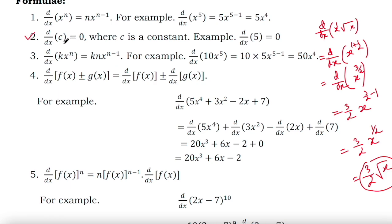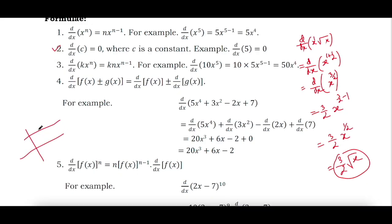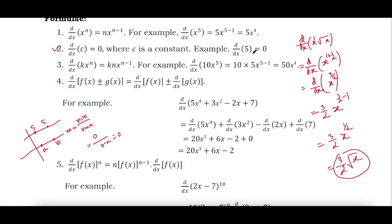Formula 2: the derivative of any constant equals 0. This is because for a constant function, x can change but y cannot — it stays fixed, for example at 5. So the slope, dy/dx, equals rise over run, and the rise is 0, making the result 0. For example, the derivative of 9 is 0 and the derivative of 7 is 0.